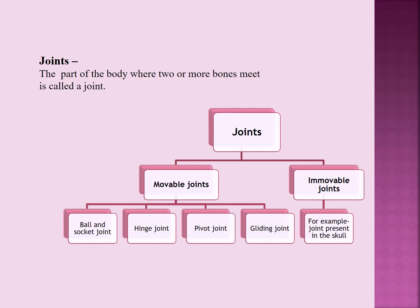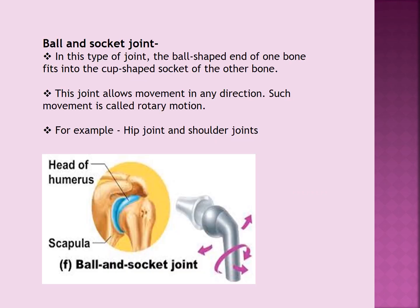Coming to movable joints. Movable joints can be further classified into four types: ball and socket joint, hinge joint, pivot joint, and gliding joint. Now we will study each one in detail.